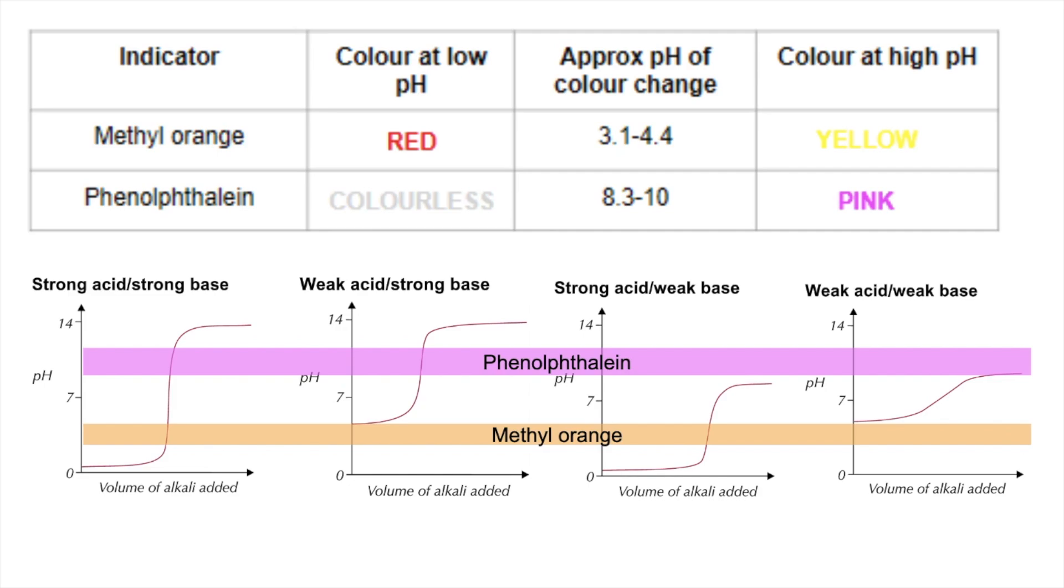Let's look at which ones are going to be okay. Methyl orange is obviously okay for the first one, strong acid-strong base. Its pH range is in the vertical section. It's not okay for this one. It is okay for the next one, strong acid-weak base, but it's not okay for the last one. Phenolphthalein is okay for the first two, but it's not okay for the others.